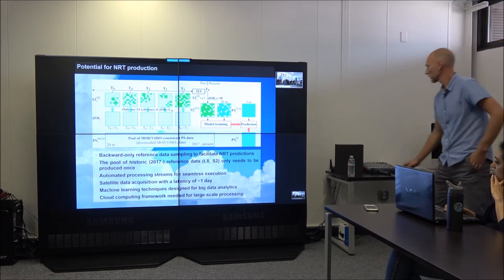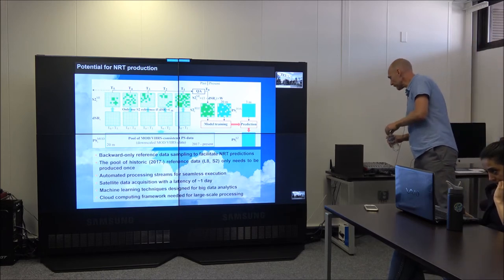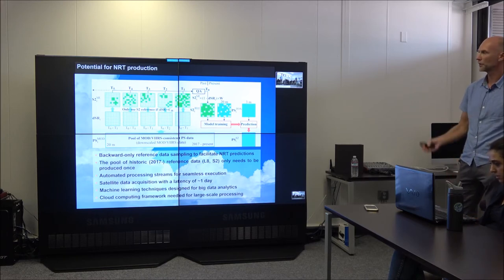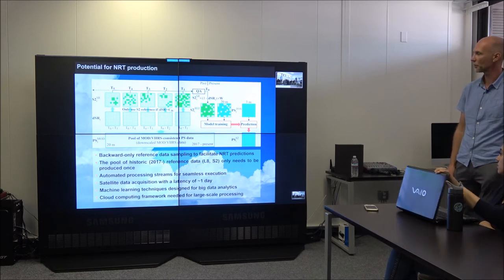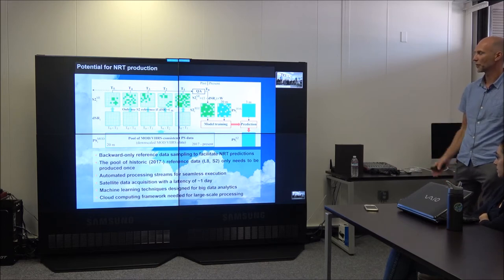So, in order to make this useful, it's really important to kind of produce a near real-time production stream, in order to power smarter farming and other applications that need this timely information for decision support and management purposes. So this is not done yet, but I think this is potentially feasible, and the methodology kind of being redesigned, and attempt to kind of facilitate that. So, steps that are being undertaken is that, you know, the reference sampling is only being done backwards now, so only looking back in time, to facilitate near real-time predictions. In the beginning, I was looking both backwards and forward in time, you know, to get a better kind of a pool of reference data to use, but it can work in this way too. And all the processing streams are being automated, have been automated for seamless execution.